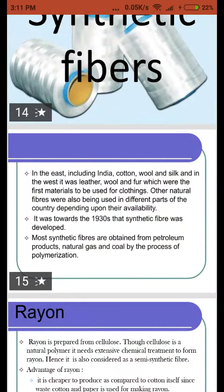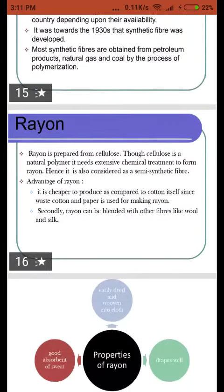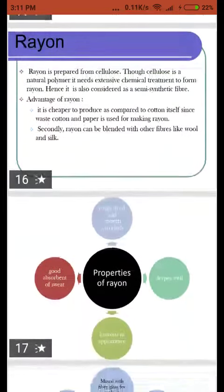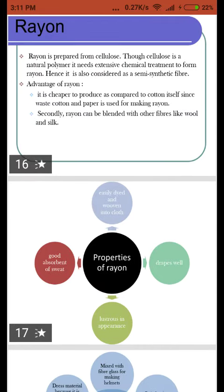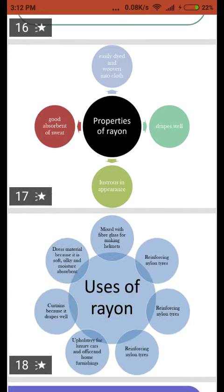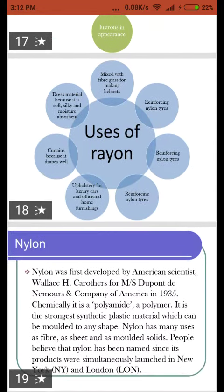Synthetic fibers are mostly obtained from petroleum products. The first one is rayon. Rayon is a synthetic fiber prepared from cellulose, so it is considered a semi-synthetic fiber. It is an alternative to silk and is much cheaper compared to natural silk. It is used in making curtains and other materials.